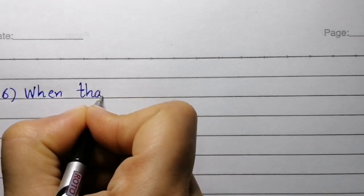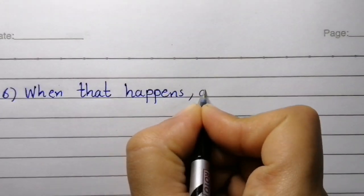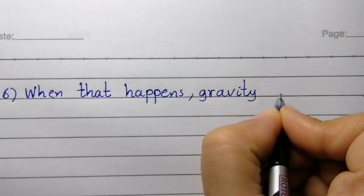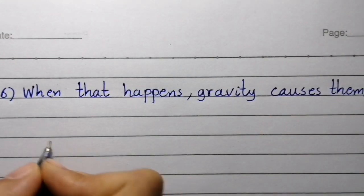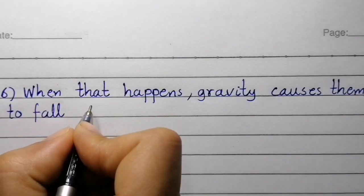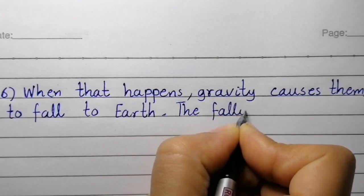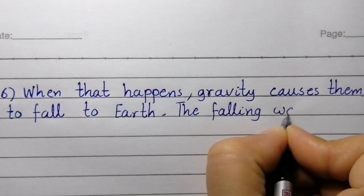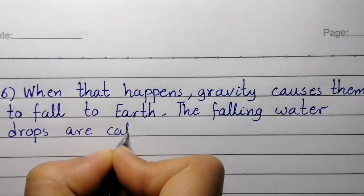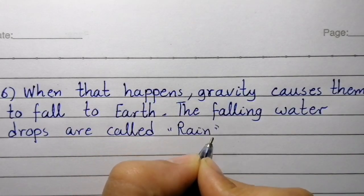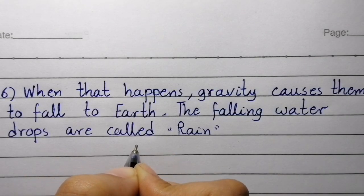Point number six: when that happens, gravity causes them to fall to earth. The falling water drops are called rain.